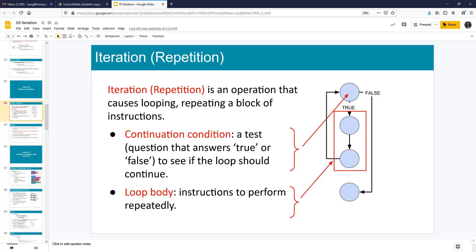Iteration or repetition is an operation that causes looping. We want to keep repeating until a certain condition is true or false. Not just one time, but multiple times, or maybe one time, but more than one time most of the time.